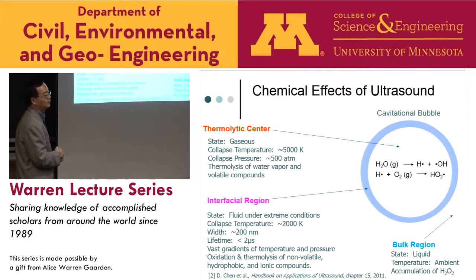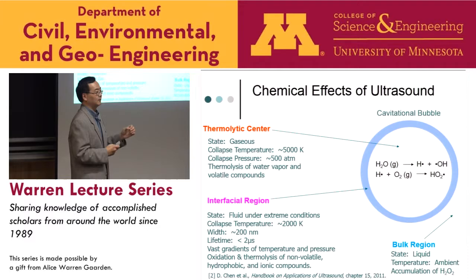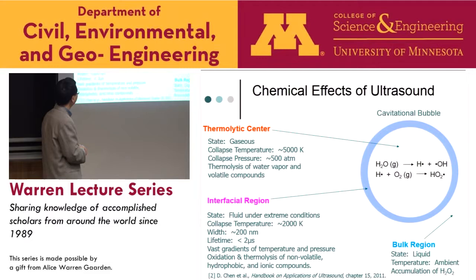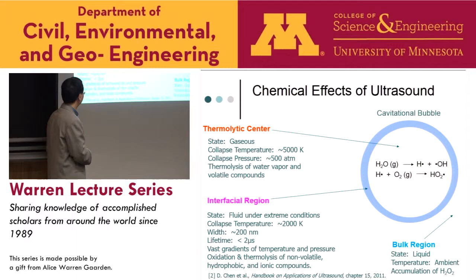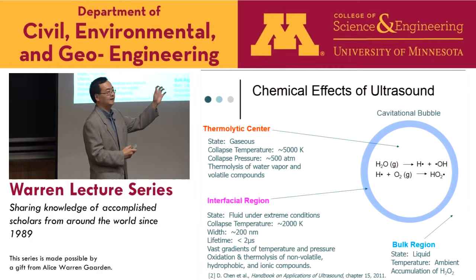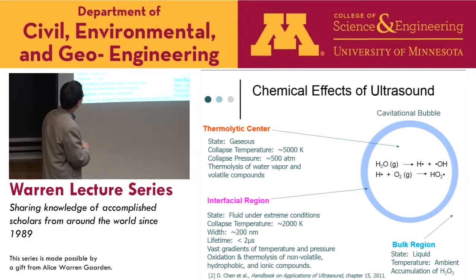The next region is the interfacial region — the bubble-water interface. During sonication, we create two phases in water: the air bubble and the water. The interfacial region has a temperature of about 2,000 K — lower than the core but still high enough to degrade organic contaminants. The width is about 200 nanometers and the lifetime is about two microseconds. It creates vast gradients of temperature and pressure, and can oxidize, thermalize, non-volatile, hydrophobic, and ionic compounds. The third region is the bulk region, at ambient temperature, where unreacted OH radicals combine to form hydrogen peroxide.